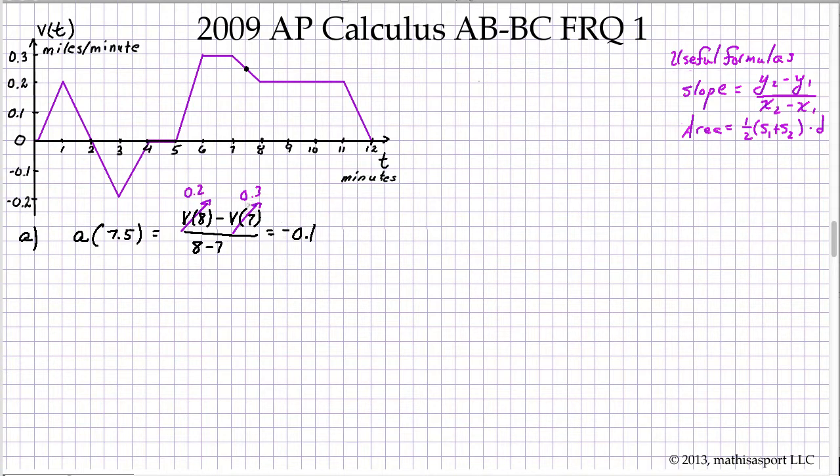That's going to be 0.2 minus 0.3 divided by 1, so what we're going to have is negative 0.1. As far as units, we've got in the numerator miles per minute, in the denominator we have minutes, and so our units are miles per minute divided by minutes, which means miles per minute squared.